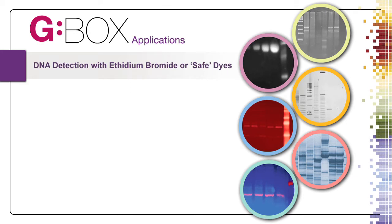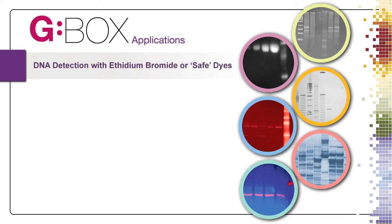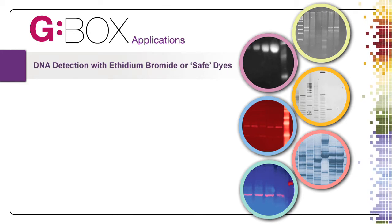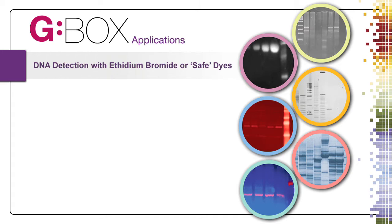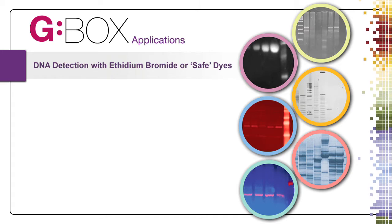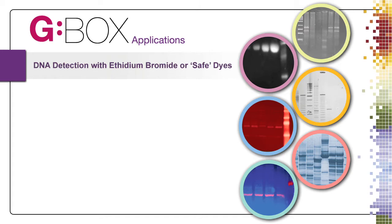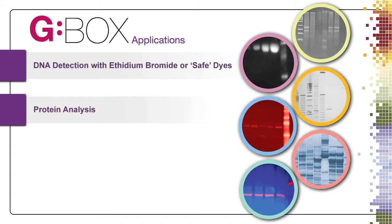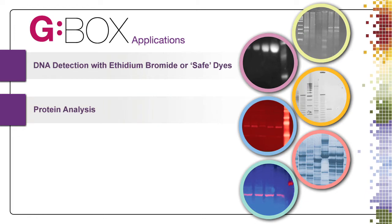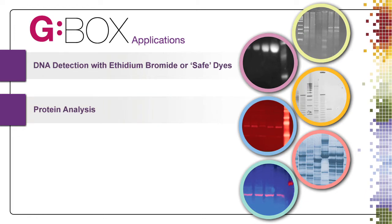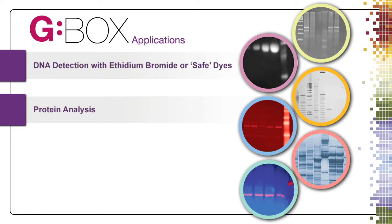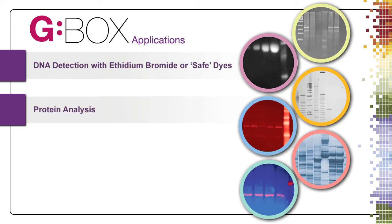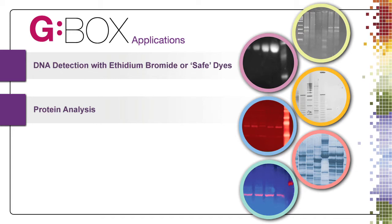Using the UV transilluminator and UV emission filter, images of ethidium bromide stained DNA gels can be captured in a fraction of a second. Protein gels can easily be captured with a G-Box using a white light converter screen with the UV transilluminator or a white light table.